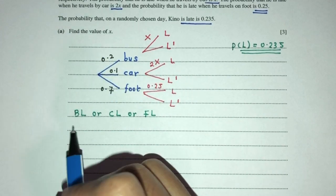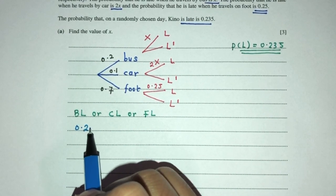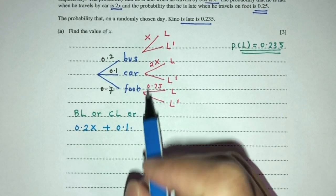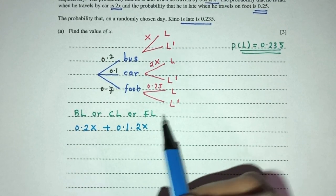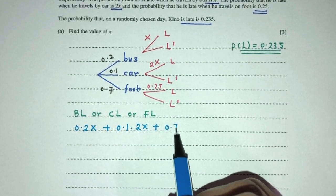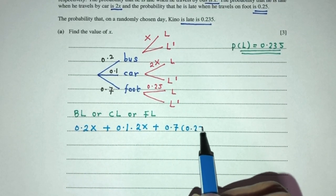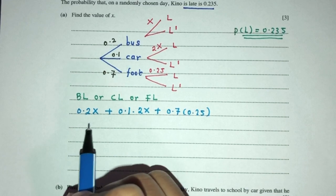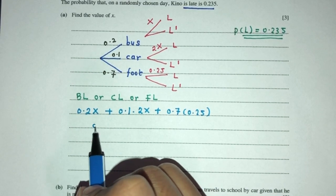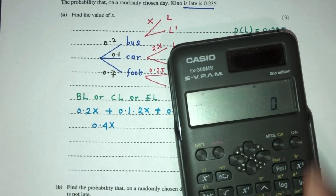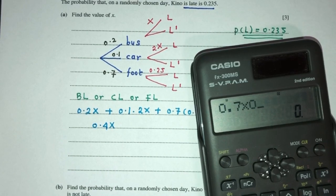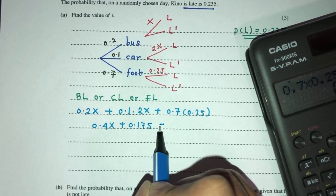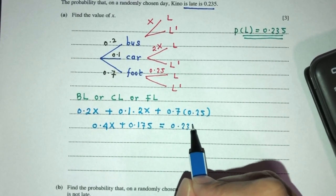That will become, bus will be 0.2, late is x, plus 0.1 times 2x, or on foot, that should be 0.7, and late 0.25. Now we have to simplify, that should become 0.2 times x plus 0.2x, that should become 0.4x. So 0.7 times the value of 0.25, that should become 0.175. And that should give you the value of 0.235 according to your question.